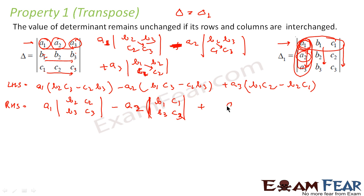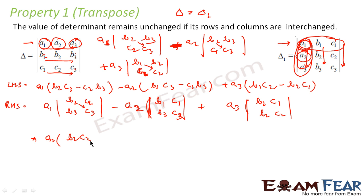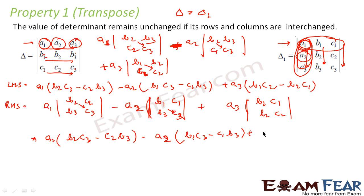Plus — now take a3. Removing its row and column, you are left with b1, c1, b2, c2. So the RHS expands to: a1·(b2·c3 minus c2·b3) minus a2·(b1·c3 minus c1·b3) plus a3·(b1·c2 minus b2·c1).